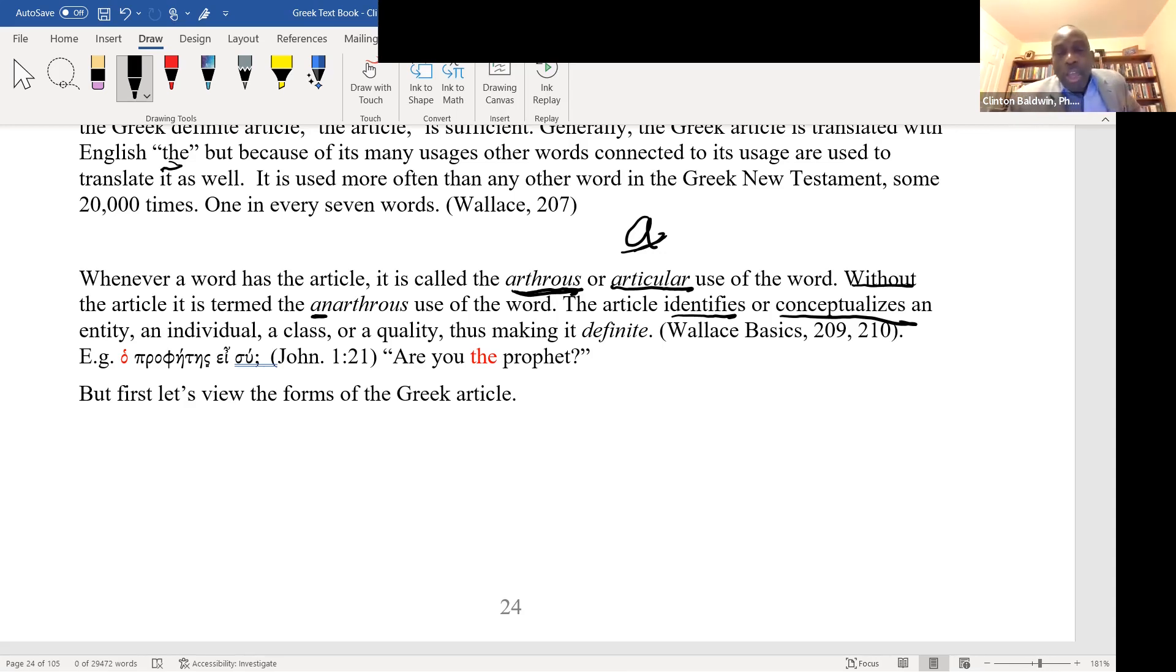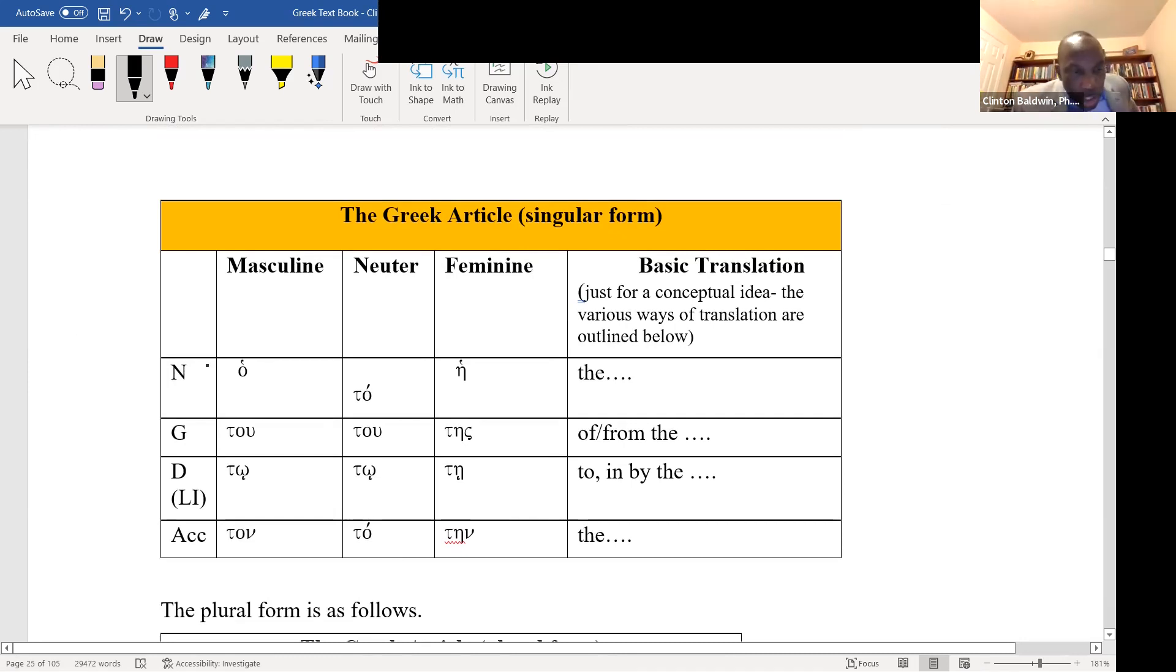Arthros is the articular use that has the article. Without the article, put an a before it and you have anarthros. You have learned the second declension already, os o o on, and it's very important that you have memorized that, because if you have, you'd automatically know the article.